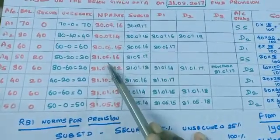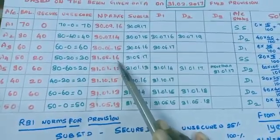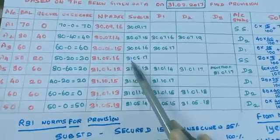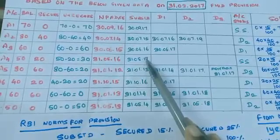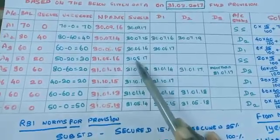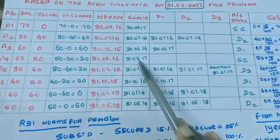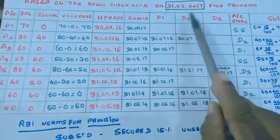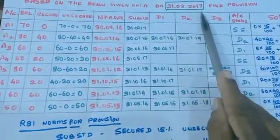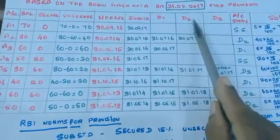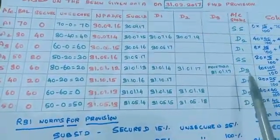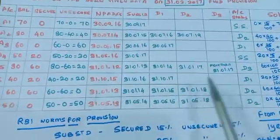The next NPA date is 31-8-16 for A4. Up to 31-8-17, this account remains in substandard category. Our date is 31-3-17, which falls within this range, so this account is in substandard category.